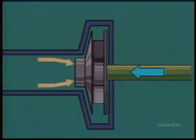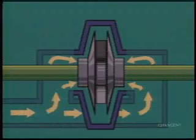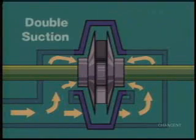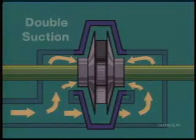It's resolved by using a double suction impeller. This type lets fluid enter both sides of the impeller. That makes the thrust generated on one side of the impeller counter the thrust from the other side.